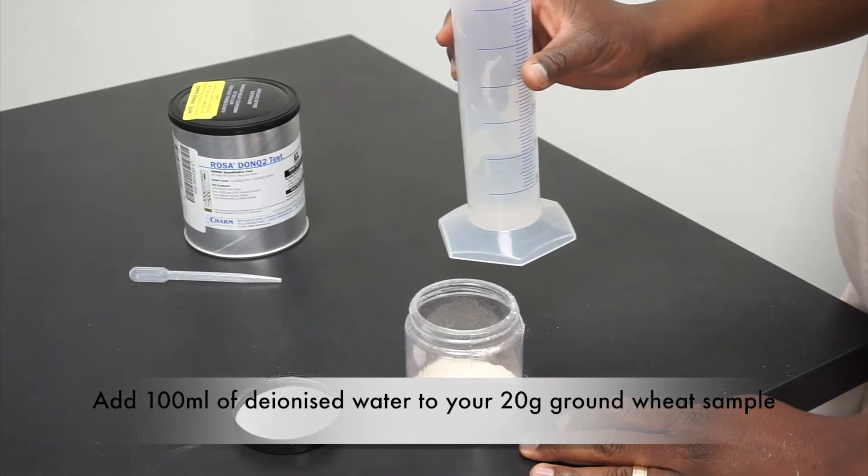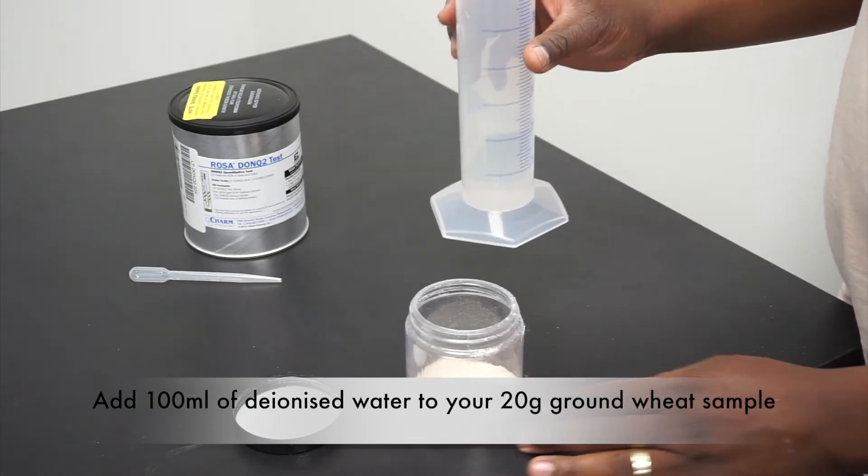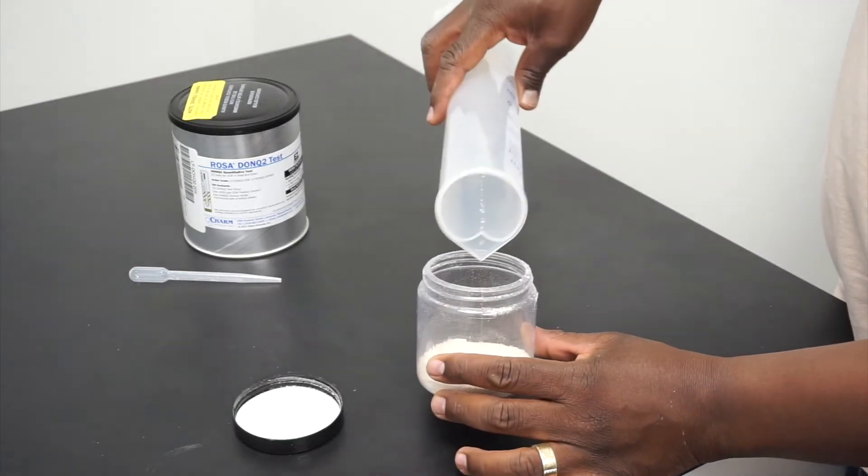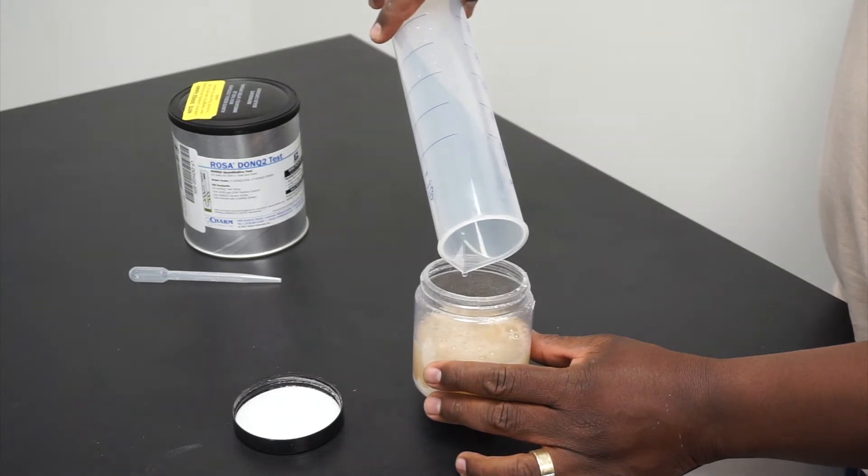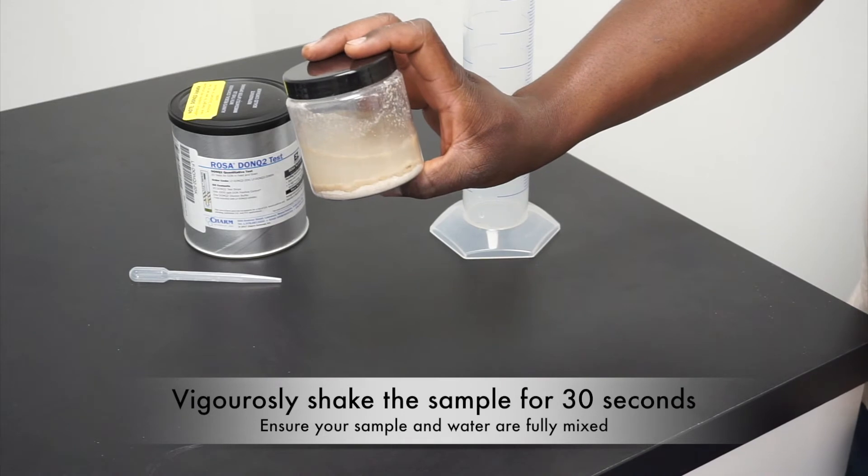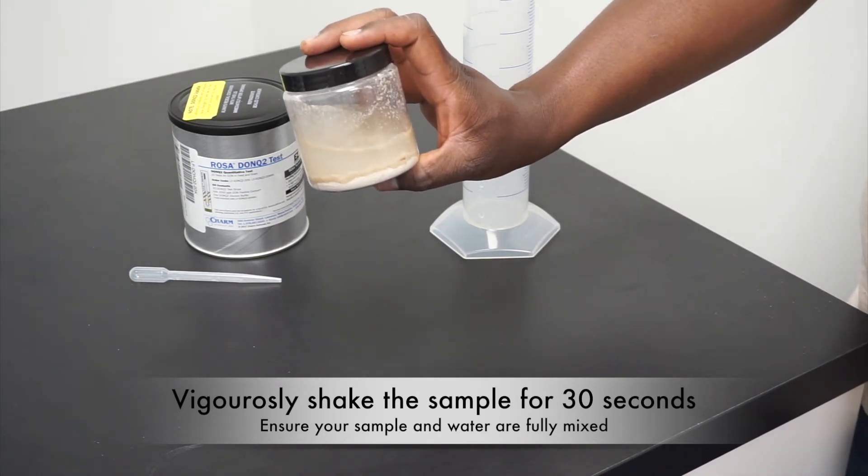Add 100 milliliters of distilled or deionized water to 20 grams of milled sample. Give your sample a vigorous shake to ensure that your milled sample is thoroughly distributed in the water.